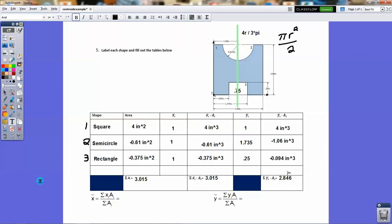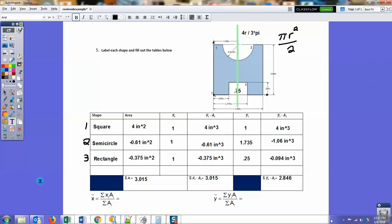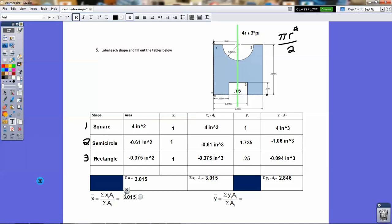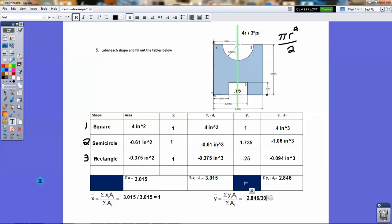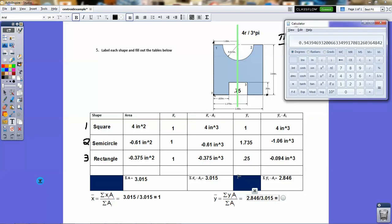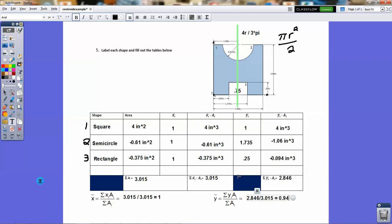Okay. So now we have those numbers, and what we're going to do is we're going to make sure we're doing this right here. Yeah. So, okay. We're going to make sure that we add them all up, and then we're going to just divide and get these numbers. So in this case, this is going to be 3.015 divided by 3.015, right? It's the sum of the XAs and divided by the A, right? So this would equal 1, so that verifies that we indeed have the right number there. This one here is going to be 2.846 divided by 3.015, which is going to be slightly less than 1, and that works out to be 2.846 divided by 3.015. That's going to be 0.94.